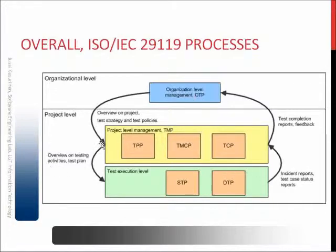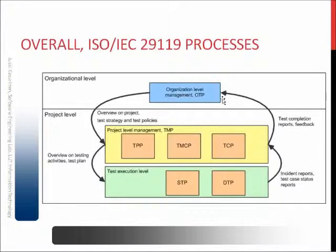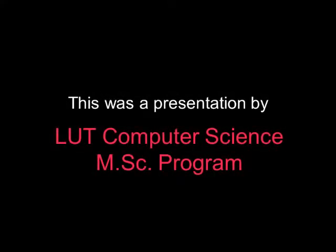The upper management steers the lower management, which steers the actual fundamental processes. The people doing the testing work give feedback to the project level management, who then give feedback to the organization level management. How this is actually implemented is up to the organization, but the concept of constant feedback and guidelines works like this. Thank you.